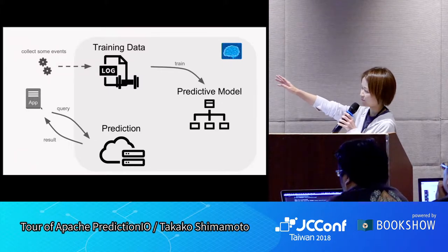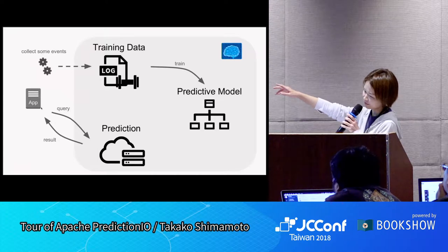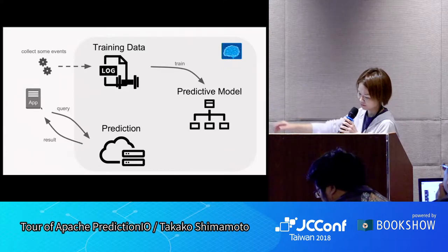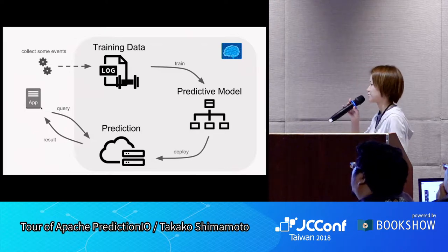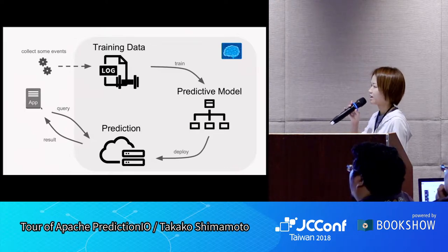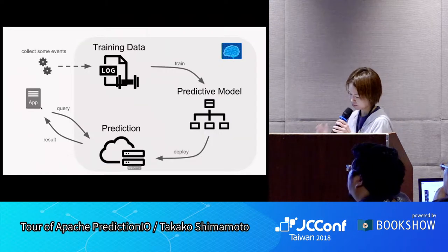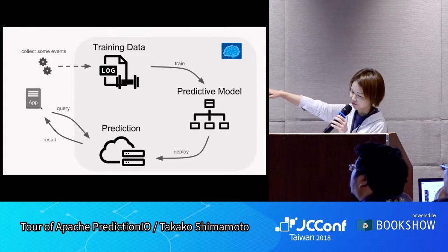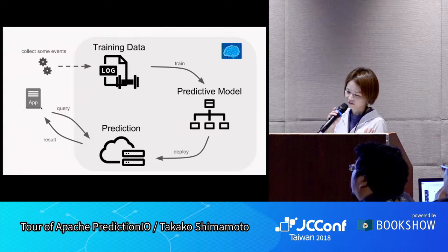Next, make a model. Designing a predictive model requires tuning some parameters which control the performance of the model. And then provide the API that returns prediction results. Finally, a web application can send a query to retrieve recommended items.